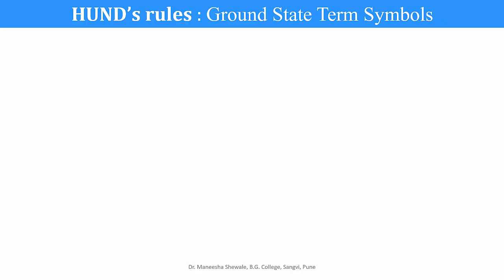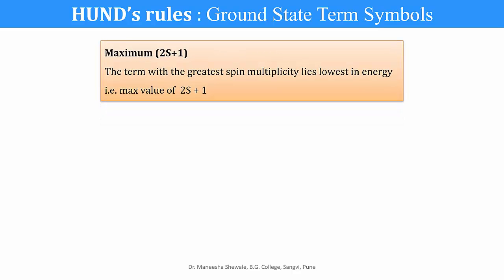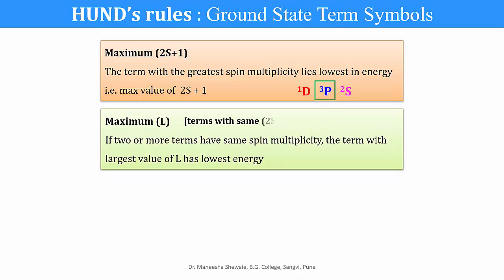To determine the ground state term symbols, we follow Hund's rules. The term with the greatest spin multiplicity will have the lowest energy. For example, among singlet D, triplet P, and doublet S, the triplet P term with the highest spin multiplicity has the lowest energy. If two or more terms have the same spin multiplicity, then the term with the largest value of L will have the lowest energy. Among D, P, and S terms with the same spin multiplicity, D has L=2, P has L=1, and S has L=0, so the D term is lowest in energy.